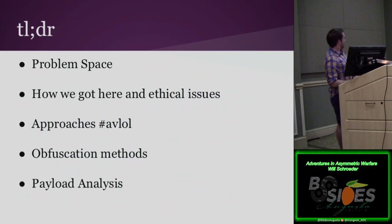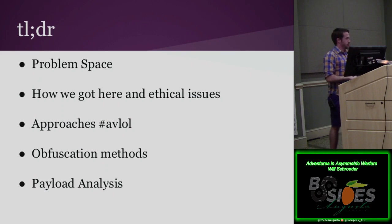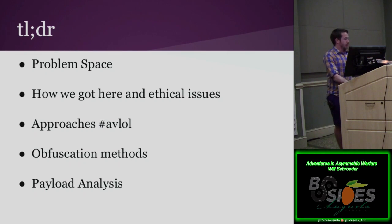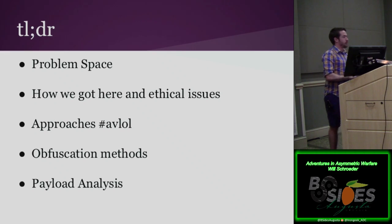For a quick TL;DR, I'm going to go over the problem space and how difficult AV detection is, how the project started and its initial motivations, several of our approaches and the evolution of our thought process in doing the obfuscation, dive into detail about the obfuscation methods at increasing levels of sophistication — which will result in the release of an entirely new Veil payload language currently in the dev tree — and wrap up with short static analysis of some of the payload families.